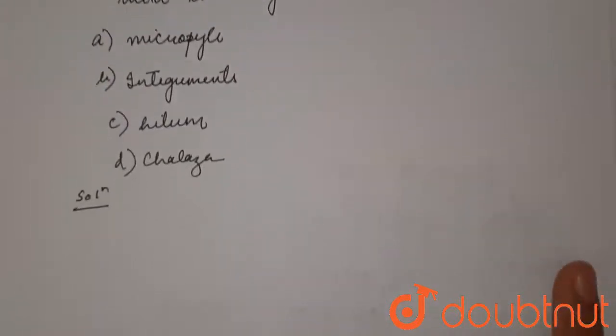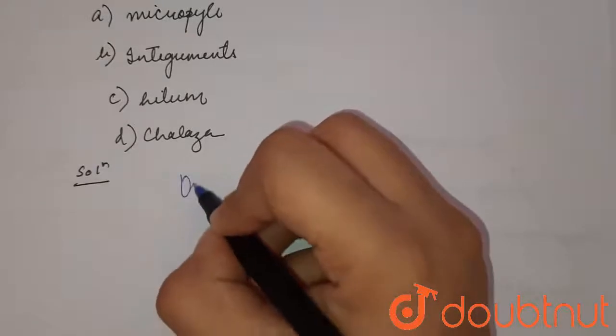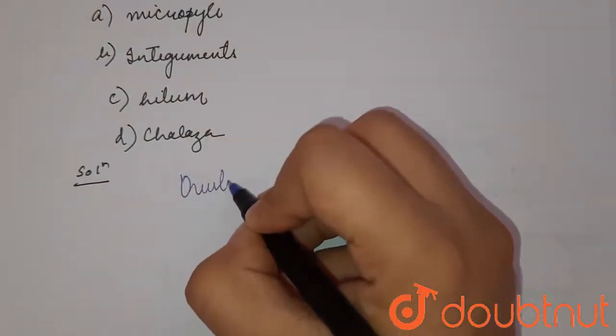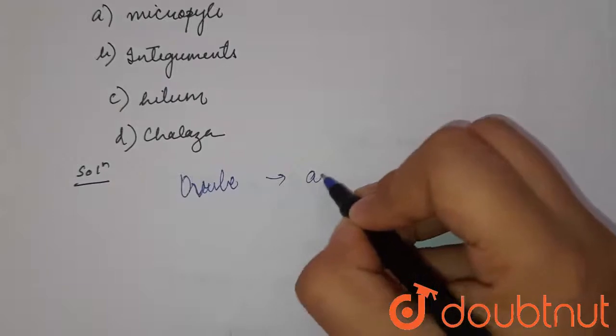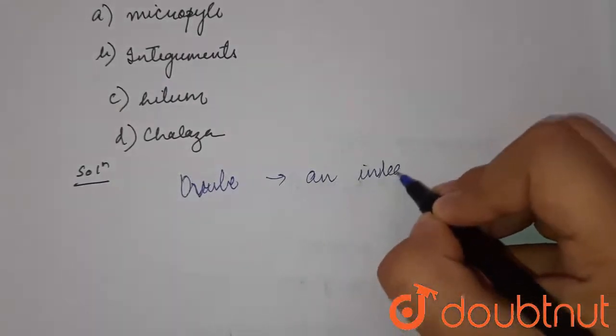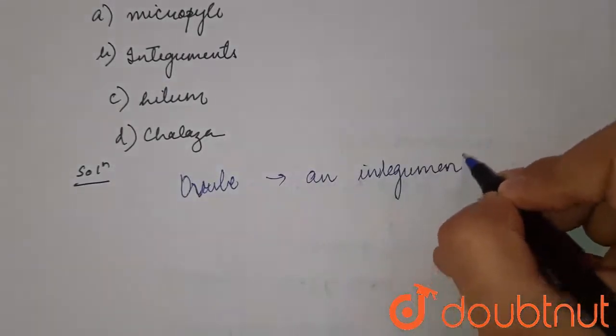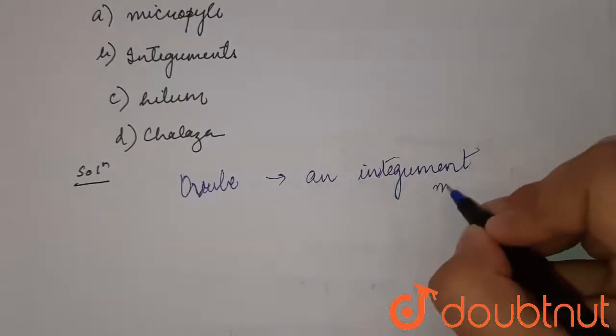...and d) chalaza. So students, the ovule has integument and mega sporengium.